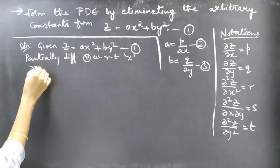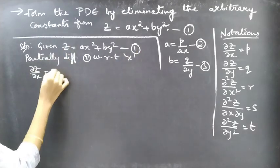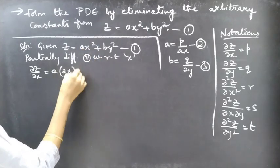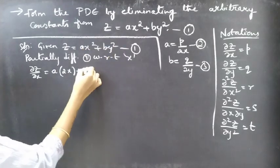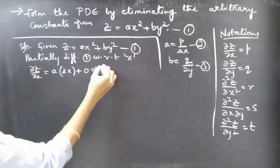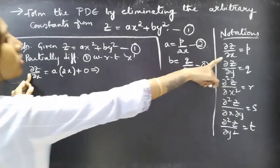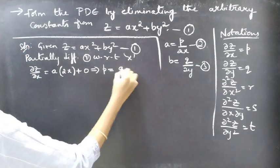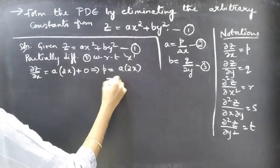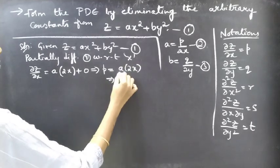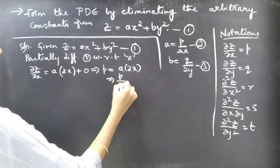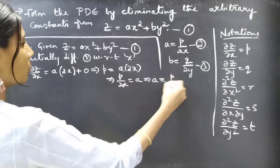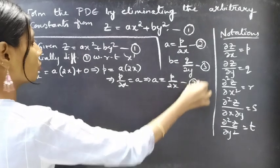Partially differentiating with respect to x, we get ∂z/∂x = a·(partial derivative of x² w.r.t. x) + (partial derivative of a constant w.r.t. x, which is 0). Since ∂z/∂x = p, replacing it gives p = a·2x. Bringing 2x to the left-hand side, we get a = p/2x. Consider this as equation number 2.